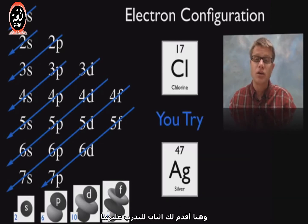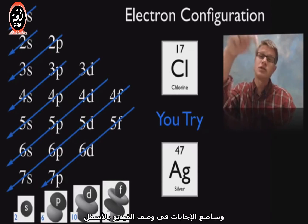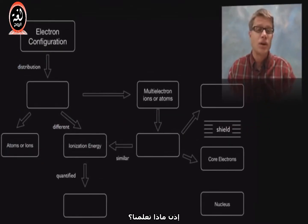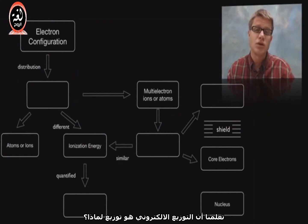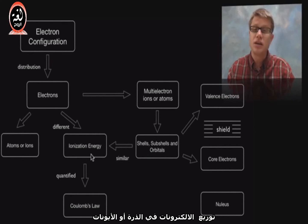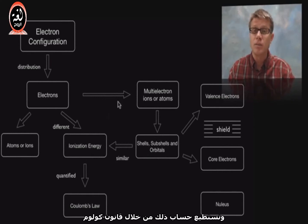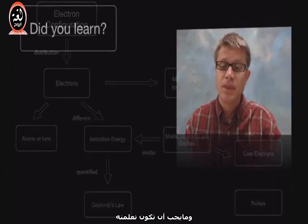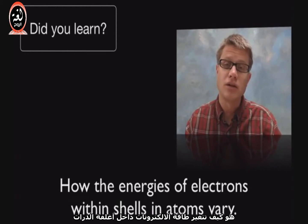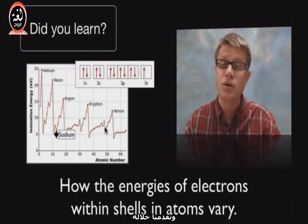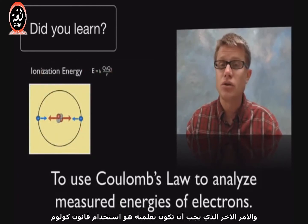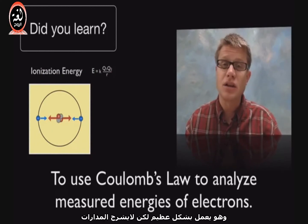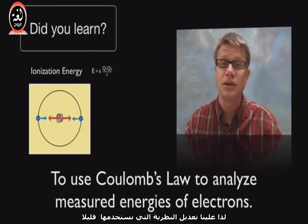Here are a couple for you to try: chlorine which has 17 electrons, or silver which has 47. I'll put the answers in the video description below. So what did we learn? Electron configuration is the distribution of electrons in atoms or ions. They each have different ionization energy, which we can quantify through Coulomb's law. Most atoms have multiple electrons organized in subshells, and those inner or core electrons shield the valence or outside electrons from the power of the nucleus. You should have learned how energies of electrons vary within shells, and how we can use Coulomb's law to analyze measured energies of electrons — though it doesn't explain orbitals, so we have to modify our theory a bit.